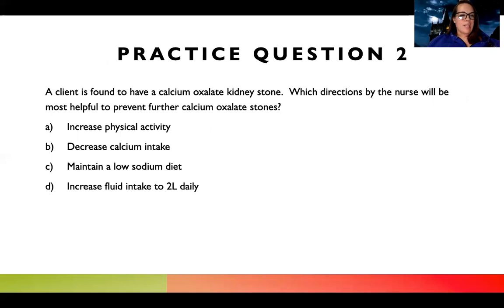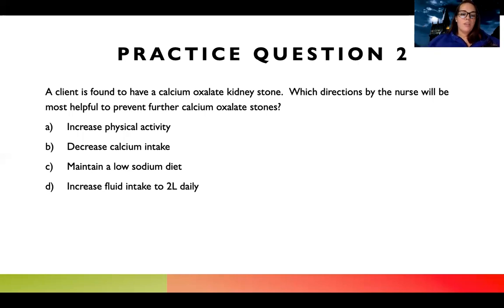Next question: a client is found to have a calcium oxalate kidney stone. Which directions by the nurse will be most helpful to prevent further calcium oxalate stones? Again, 'most helpful' means there might be multiple right answers, but which one is going to be most direct? Choice A is increased physical activity. If I knew a lot about kidney stones, I might think that helps pass them, but I don't know if it's going to actually help prevent further stones.